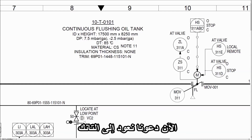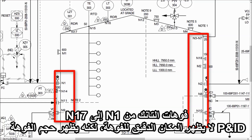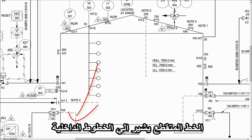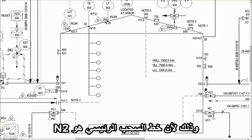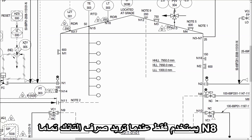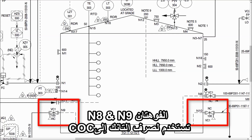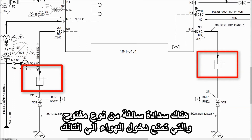Now let's go back to the tank. N1 to N17 are nozzle numbers. P&ID does not show the exact location of the nozzle, but it shows the size of the nozzle. Manholes are shown as M1 to M3. The broken line shows internal piping. There is a vortex breaker with nozzle N8 connected to the pump suction line with a normally closed gate valve — this is because the main suction line is N2, and N8 will be used only when you want to drain the tank completely. There are also nozzles N9 and N10 used to drain the tank to COC. This open type liquid seal prevents air ingress into the tank.